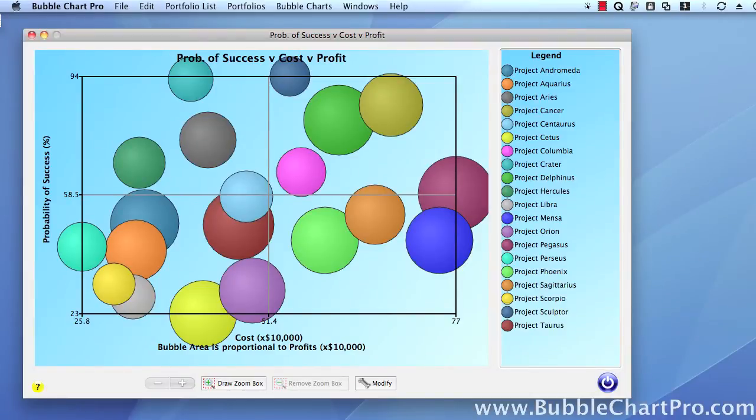Bubble charts are an extremely useful way to study business data in three dimensions, where the x-axis is one dimension, the y-axis is another dimension, and the bubble size is the third dimension. BubbleChart Pro makes it extremely easy for you to visualize and analyze your data in beautiful bubble charts.